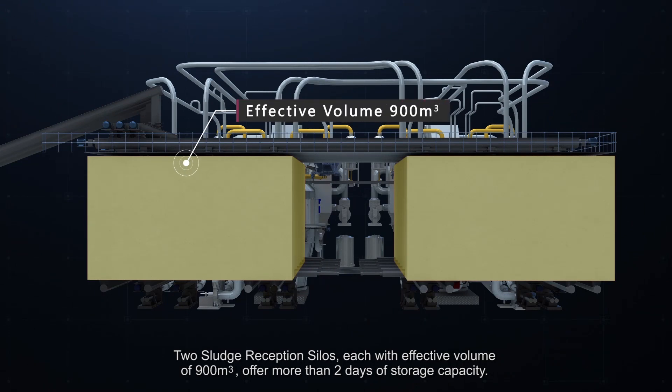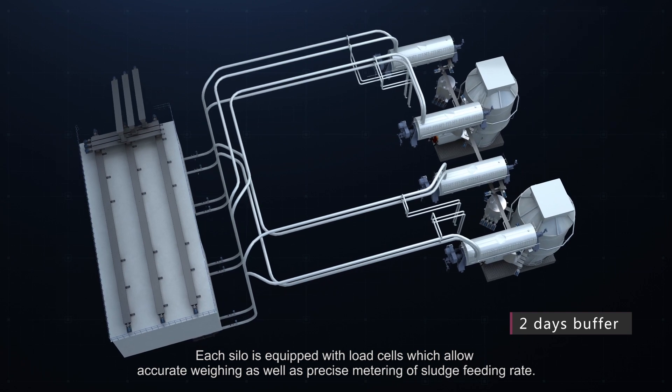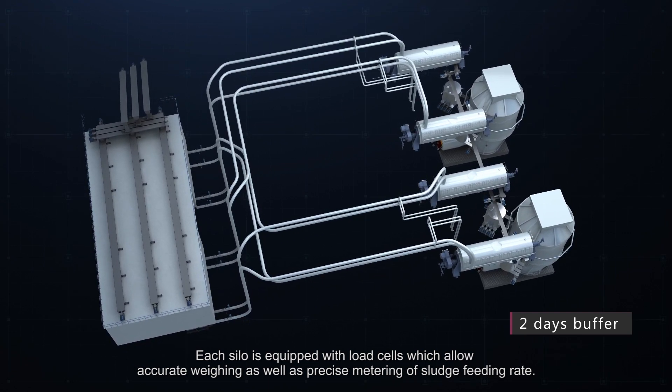Two sludge reception silos, each with effective volume of 900 cubic meters, offers more than two days of storage capacity. Each silo is equipped with load cells which allow accurate weighing as well as precise metering of sludge feeding rate.